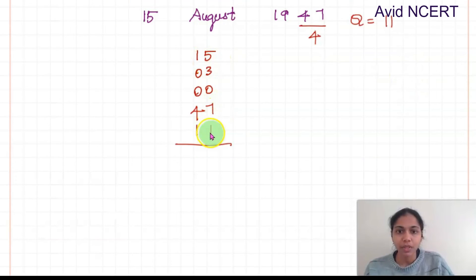Add all this. So 7 plus 1 is 8. 5 plus 3 is 8. 8 plus 8 is 16. 1, 4 plus 1, 5, 6, 7. So 76.